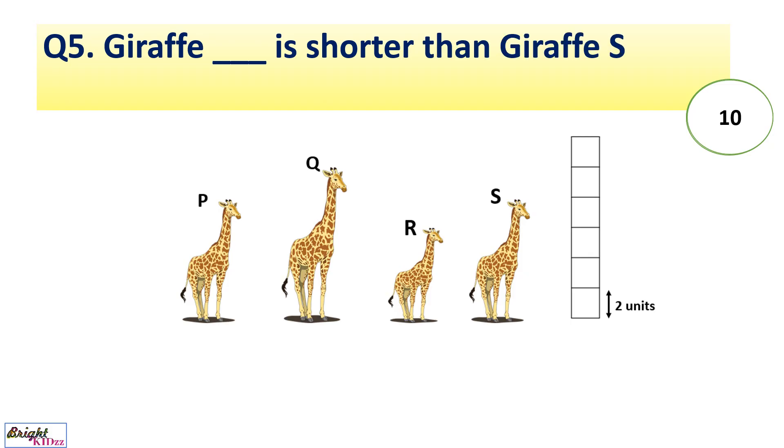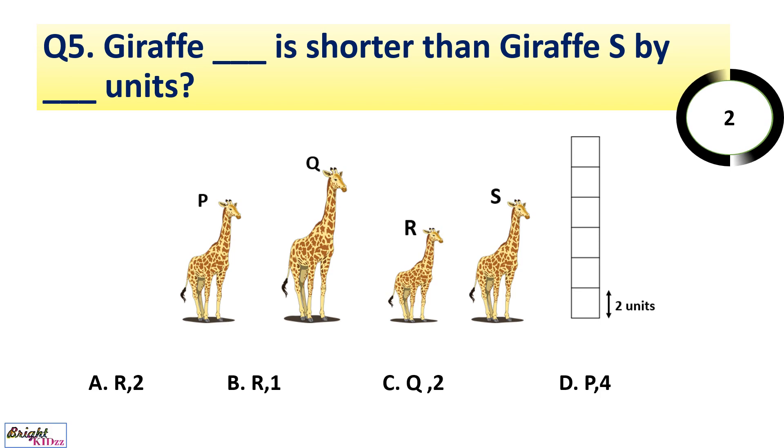Giraffe dash is shorter than Giraffe S by dash units. You can see Giraffe S is here. P and S are equal. Only R Giraffe is shorter than Giraffe S, and this is one box is there which is equal to 2 units. So answer is Giraffe R is shorter than Giraffe S by 2 units.